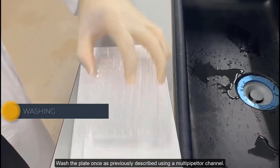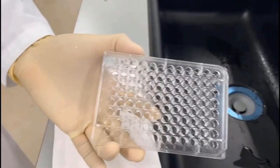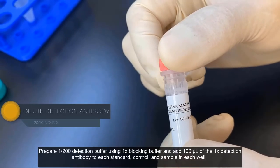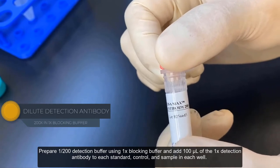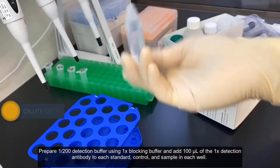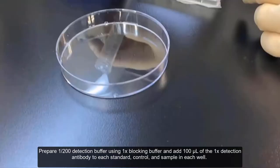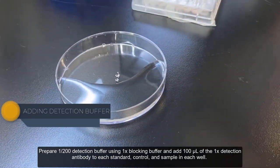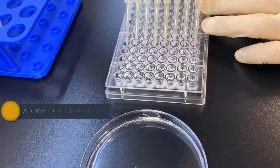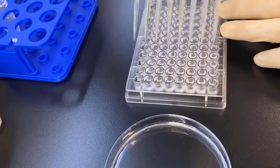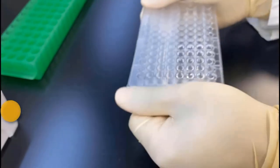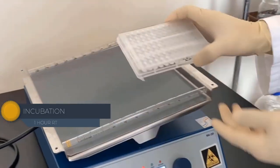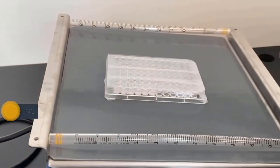Wash the plate once, as previously described using a multi-pipetter channel. Prepare 1 over 200X detection buffer using a 1X blocking buffer and add 100 microliters of the 1X detection antibody to each standard, control and sample in each well. Seal the plate with parafilm and incubate at room temperature for 1 hour on a plate shaker at 5 RPM.